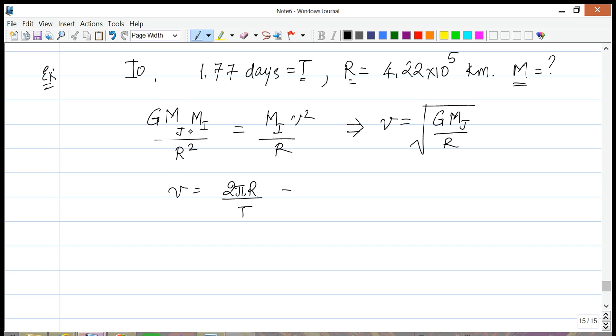Great. So now we can equate the two speeds, which means 2πR over T is equal to square root of G M_J over R.